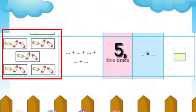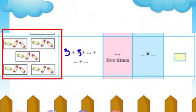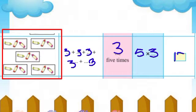Look at the next picture. There are three color chalks in each box, and boxes are five. Pratyek box madhe teen rangit khadoo distat, aani ase paach boxes aahet. As an addition: 3 plus 3 plus 3 plus 3 plus 3 — how many times? 3, five times. Teen he paach vela lihile — as a multiplication: 5 multiply by 3. Total number of objects: 15.